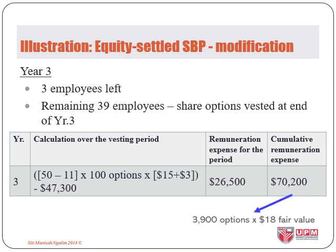This $70,200 is equivalent to the expense on 100 options for 39 employees at fair value of $18.